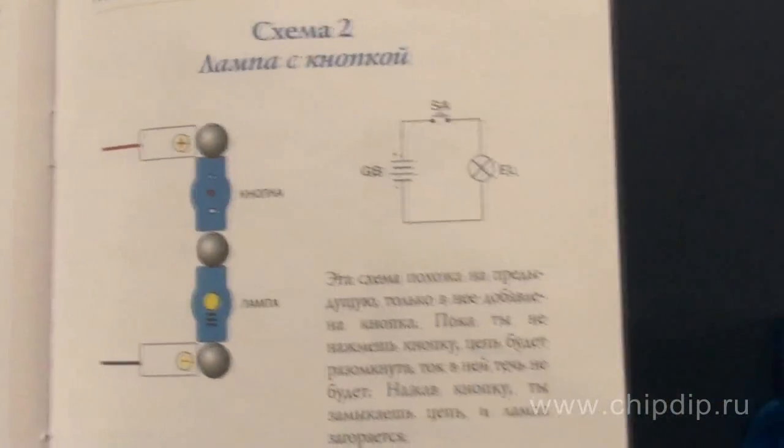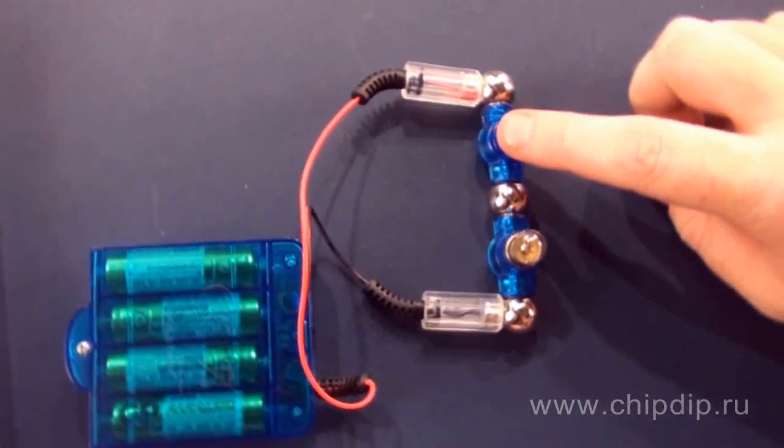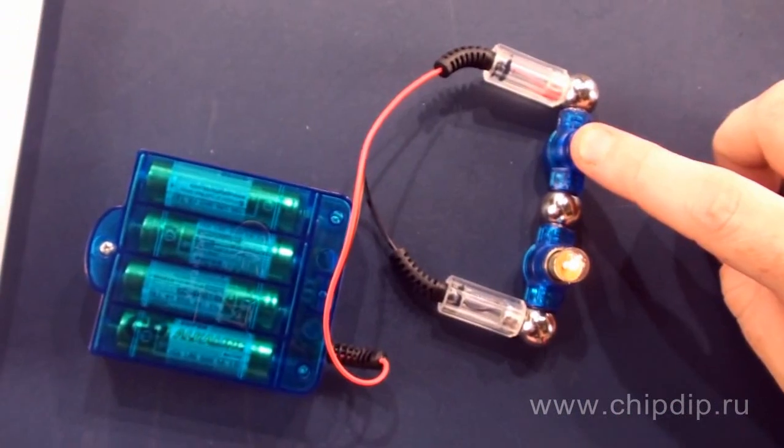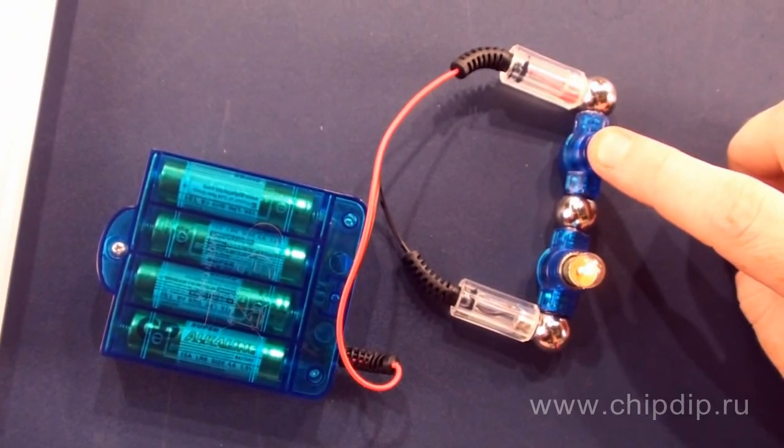The circuit is open and there is no current going in the circuit until you press the button. When you press the button you close the circuit and the bulb is on.